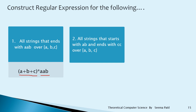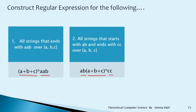Second: all strings that start with AB and end with CC over {A, B, C}. Write AB at the start and CC at the end. In between, there can be any number of A, B, C, so write (A + B + C)*. The regular expression is AB(A + B + C)*CC.